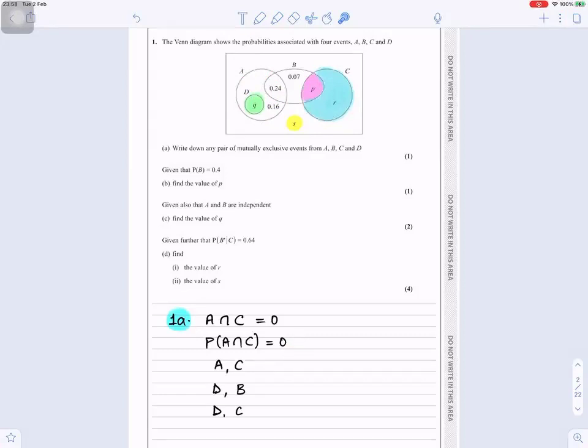D and B. That's D there. D and B. That's D there in the green, small green circle there. And that's B there. So D and C as well.